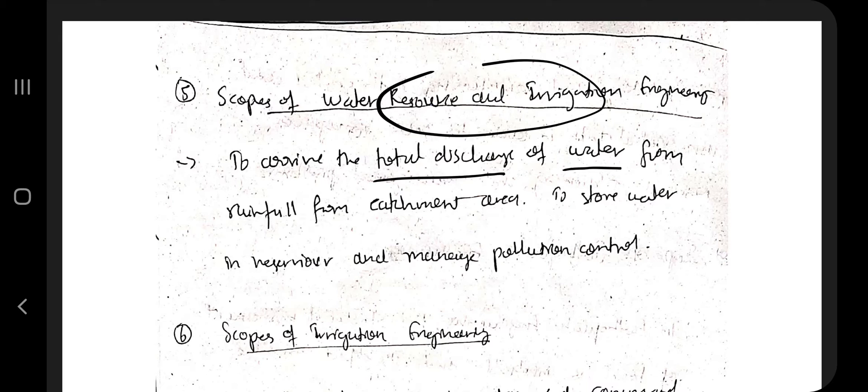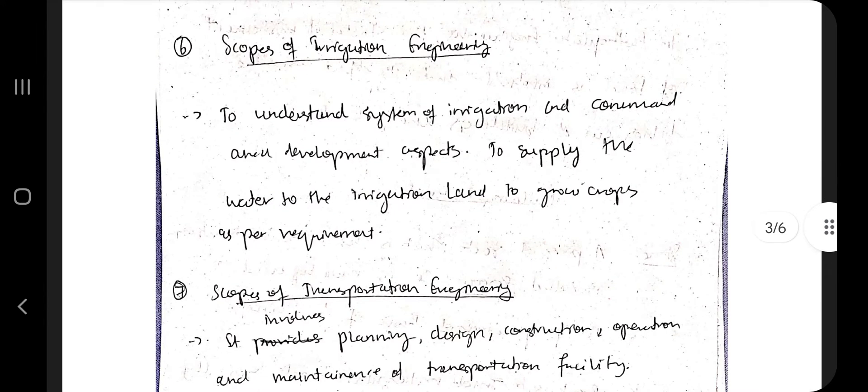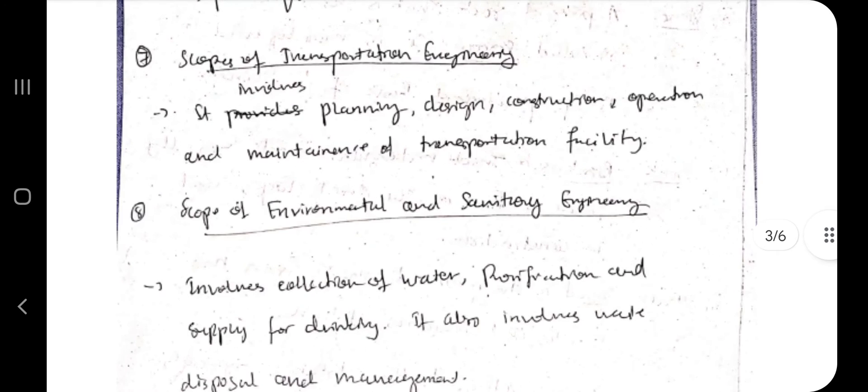This includes storing water in reservoirs, managing pollution control, and so on. Irrigation engineering understands the system of irrigation and command to develop aspects to supply water to irrigation land and grow crops.